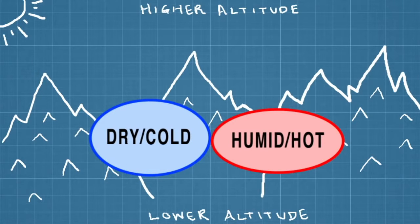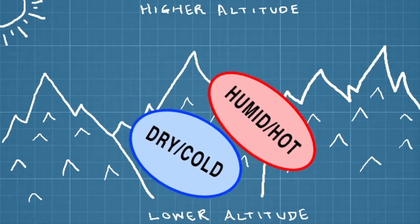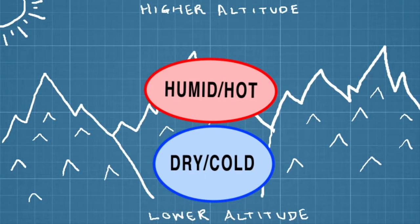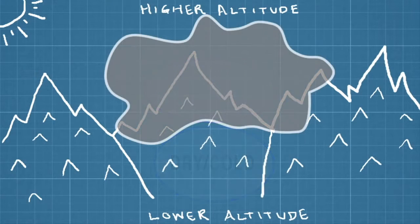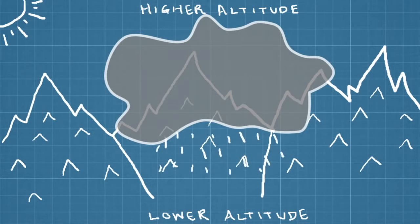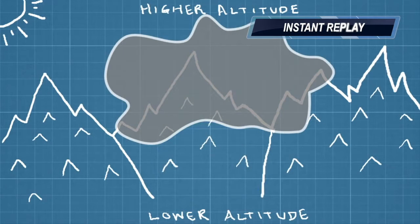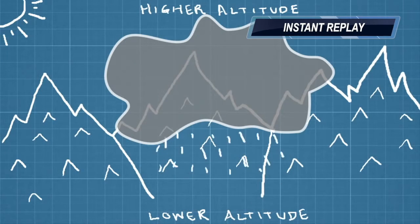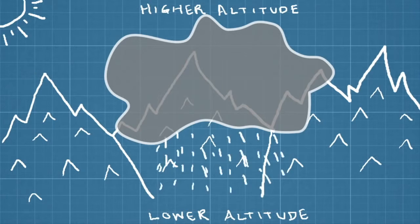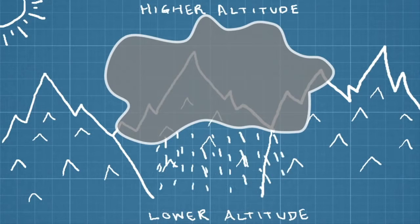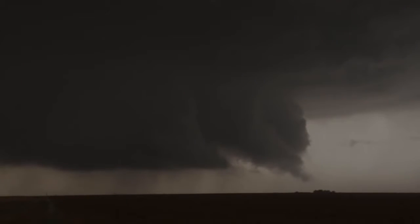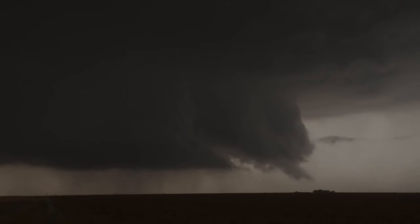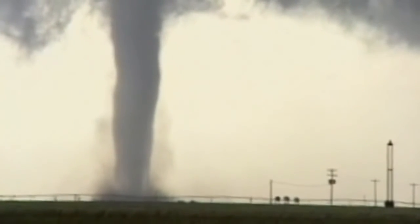When a cold, dense air mass slams into a warm, humid air mass, it forces its way under the warmer air, pushing it up and causing the warm air to lift and cool. This causes the moisture in the upper air to condense into clouds and precipitate out as rain or snow, or even hail in some thunderstorms. The greater the differences in temperature, humidity, and air pressure between air masses, the more likely they are to produce severe, even deadly storms.